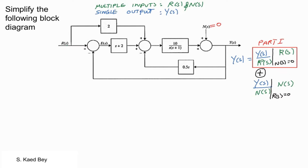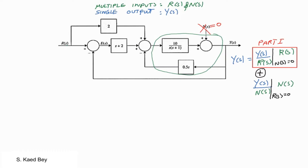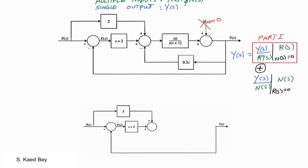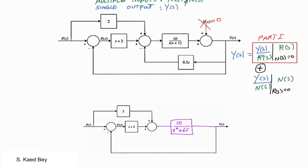Let us set the measurement noise N equal to zero in order to find Part 1, the first component of the output Y. We will start by finding the transfer function of the feedback loop on the right-hand side. According to Rule 5 in the block diagram reduction rules discussed in the previous video, a summing point while simplifying can be shifted to the left.